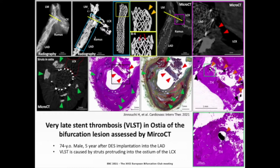A 74-year-old man, five years after drug-eluting stent implantation into the LAD, had very late stent thrombosis caused by struts protruding into the ostium of the left circumflex that remained uncovered. The micro-CT image is shown on the right, the radiographic image on the left. You can see the bend at the ostium of the left circumflex of the Endeavor struts, and the area highlighted at the bifurcation shows thrombus in the ostium of the left circumflex. The thrombus is visible in histology, and the cross-section shows that the site of thrombosis is at the ostium.